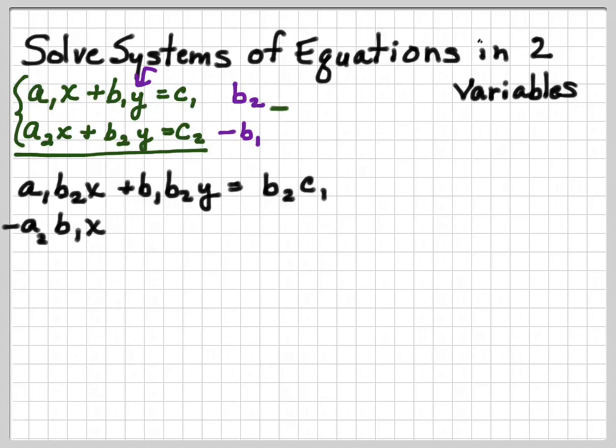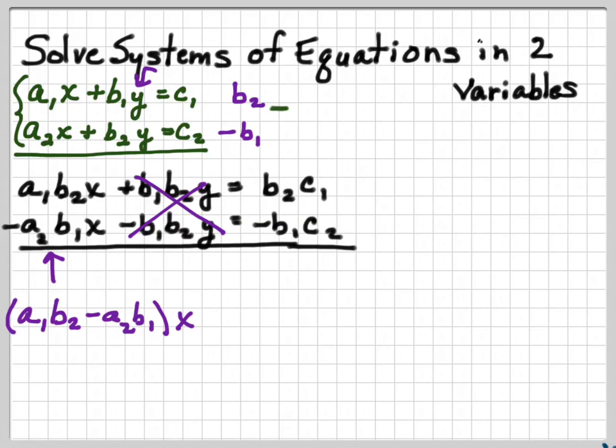And the second one is going to be minus a sub 2 b sub 1 x minus b sub 1 b sub 2 y equals negative b sub 1 c sub 2. Boy, there's a lot of subs in there. But you can see that the y's cancel out, because we have plus b sub 1 b sub 2 minus b sub 1 b sub 2. So when I add these two together now, I'm going to add them together and factor out the x.